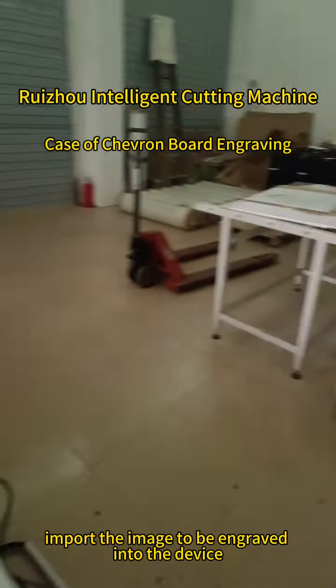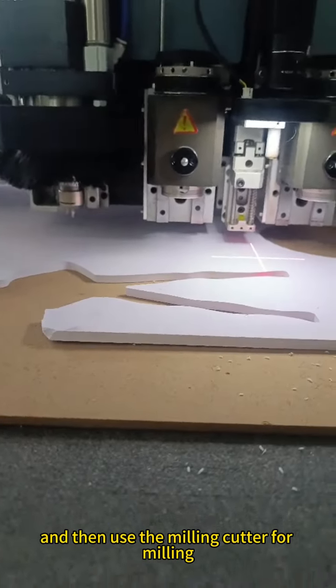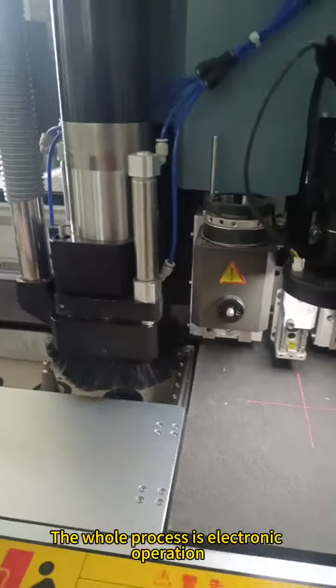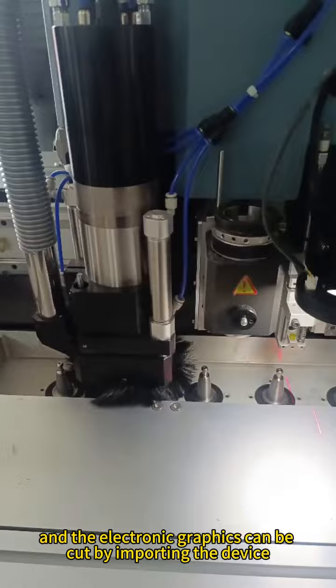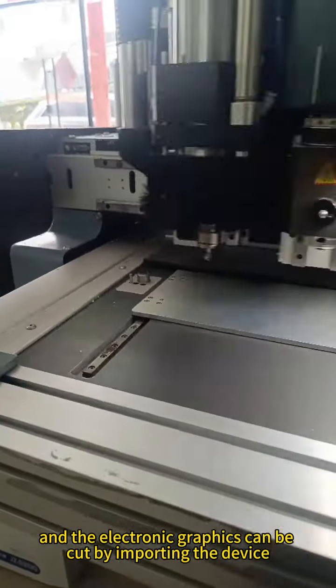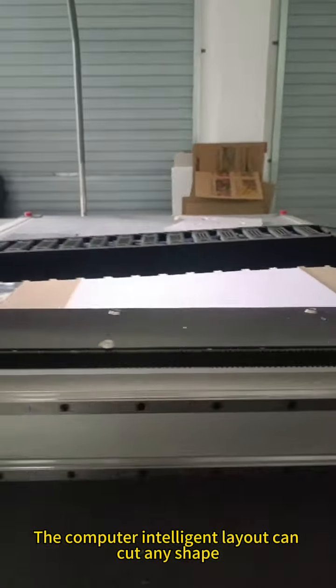First, import the image to be engraved into the device, then use the milling cutter for milling. The whole process is electronic operation. Electronic graphics can be cut by importing them into the device with intelligent computer layout.